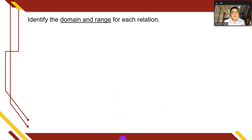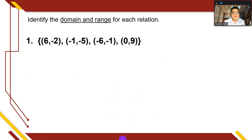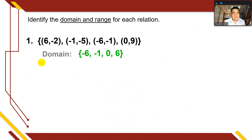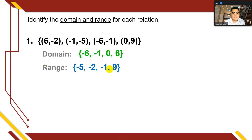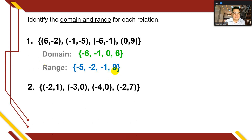Let's identify the domain and range for each relation. For number 1, we have the set: (6, -2), (-1, -5), (-6, -1), (0, 9). The first numbers are the domain or x-values: -6, -1, 0, and 6 (ordered). For the range, we have the second numbers: -5, -2, -1, and 9.